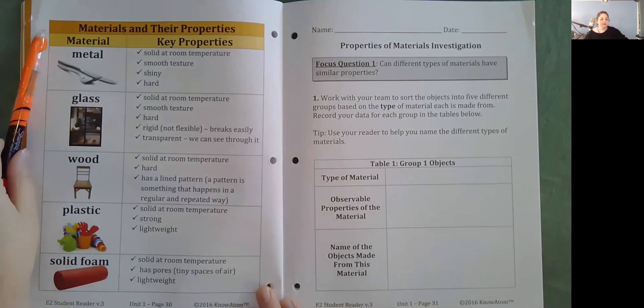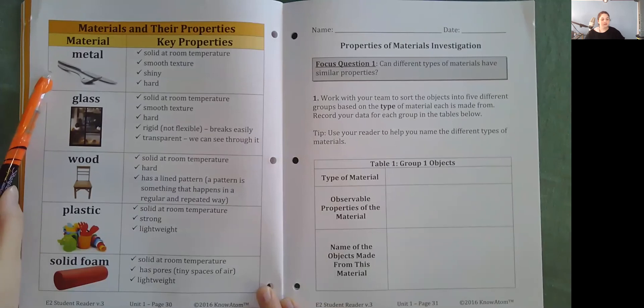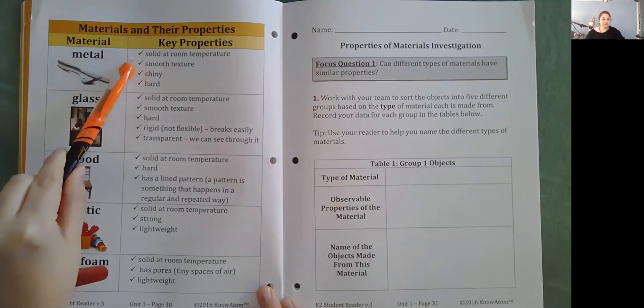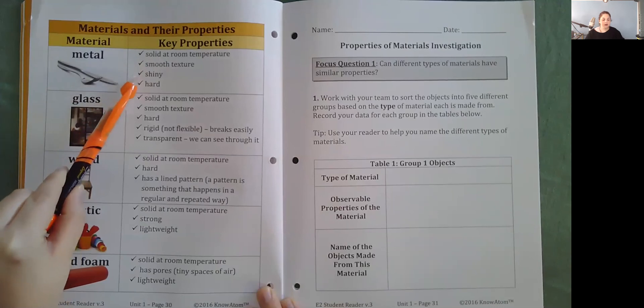Materials and their property. Metal. Solid at room temperature. Smooth texture. Shiny. Hard.